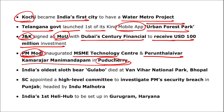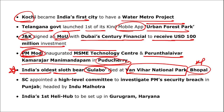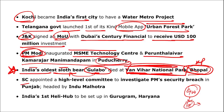PM Modi inaugurated the MSME Technology Centre in Puducherry. India's oldest sloth bear named Gulabo died at Van Vihar National Park in Bhopal, Madhya Pradesh — highly important. The first ever drone mela was observed in Gwalior. The Supreme Court appointed a high-level committee headed by Indu Malhotra to investigate PM Modi's security breach in Punjab.